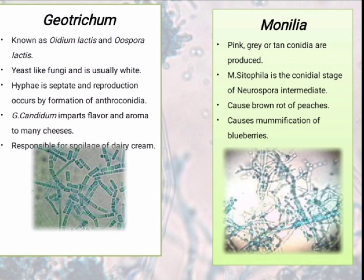Now we talk about another genus, Monilia. Pink, grey or tan conidia are produced under this genus. Monilia cytophylla is the conidial stage of Neurospora intermedia. They cause brown rot of peaches and mummification of blueberries.